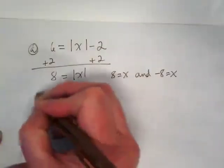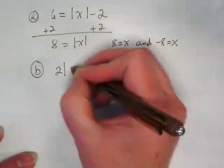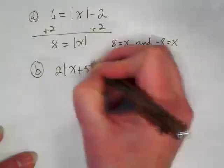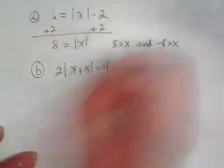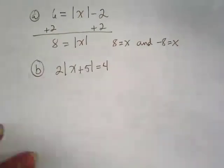Then we get into a slightly more challenging one with B. We have 2 being multiplied by the absolute value of X plus 5 is equal to 4. How do I know that 2 is being multiplied by it? It's right next to it.